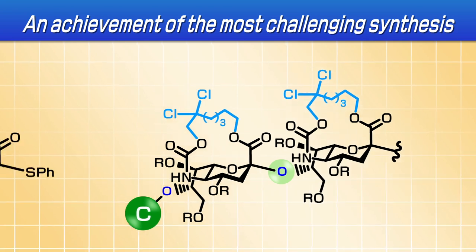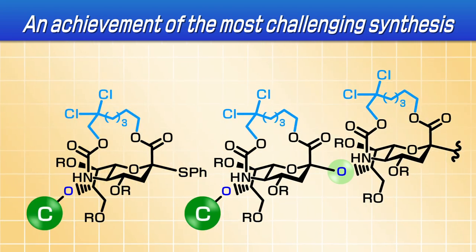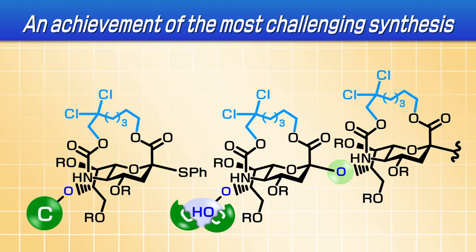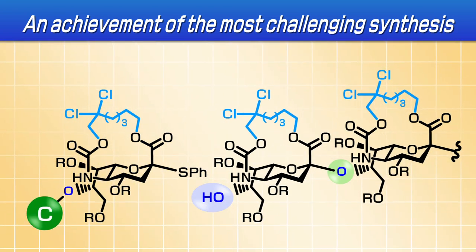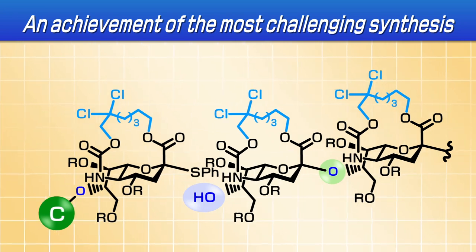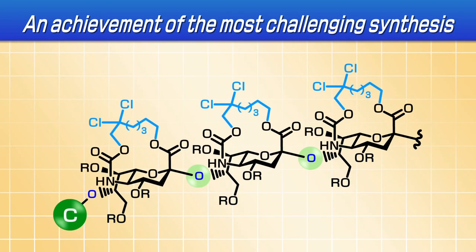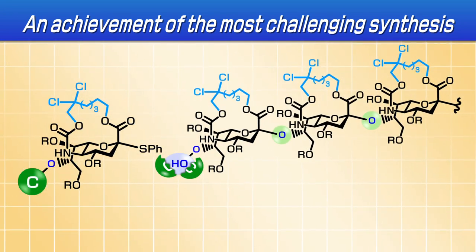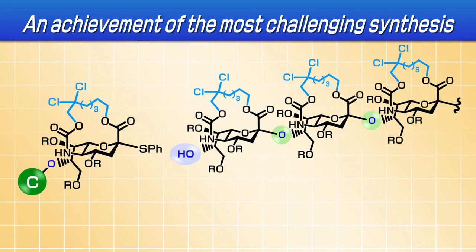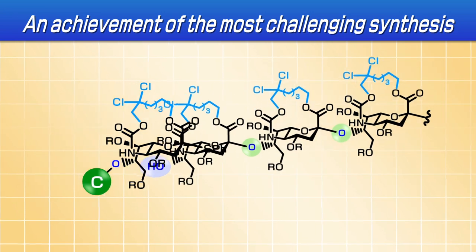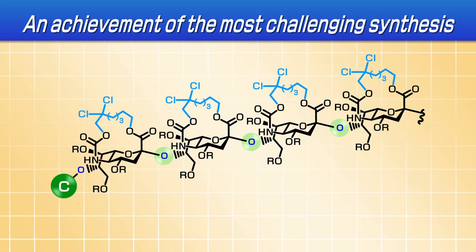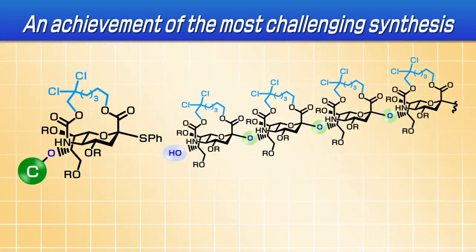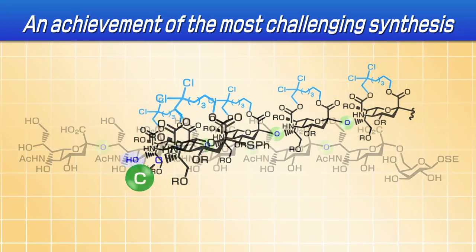Using our breached sialic acid, we have successfully developed a sialic acid pentamer with five sialic acid molecules connected by alpha-glycosidic linkages. To date, this is the longest chain of sialic acid in the world.